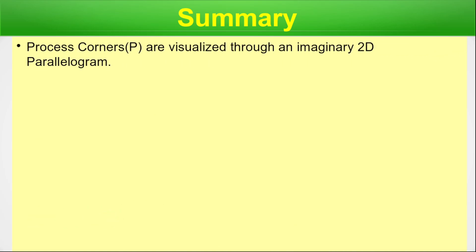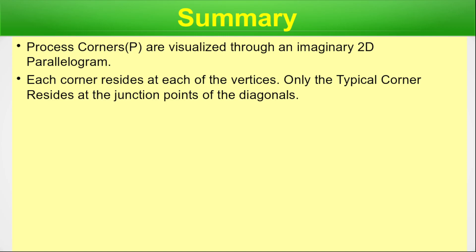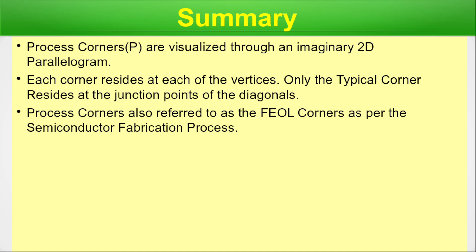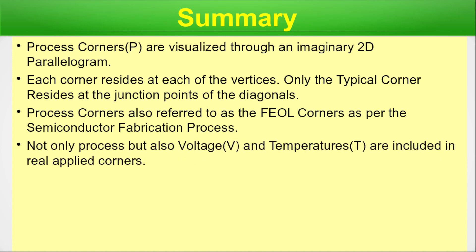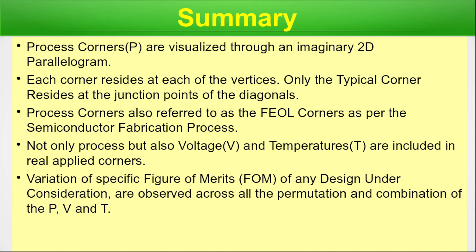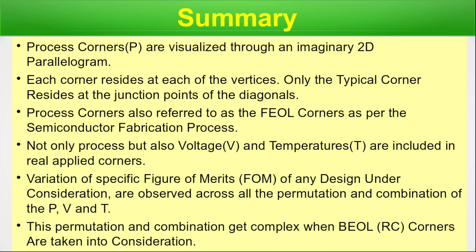In summary: process corners are visualized through an imaginary 2D parallelogram, with each corner at a vertex and the typical corner at the junction of the diagonals. Process corners are also referred to as FEOL corners per the semiconductor fabrication process — this is why the CMOS layout was shown, as process corners impact the FEOL which creates the basic semiconductor structures. Not only process, but also voltage and temperature are included in the real applied corners. Variation of specific figures of merit across permutations and combinations of P, V, and T can get complex when BEOL (RC) corners are also taken into consideration.